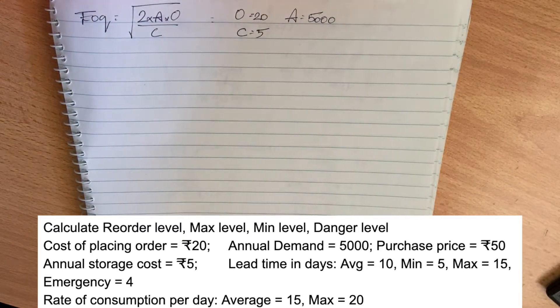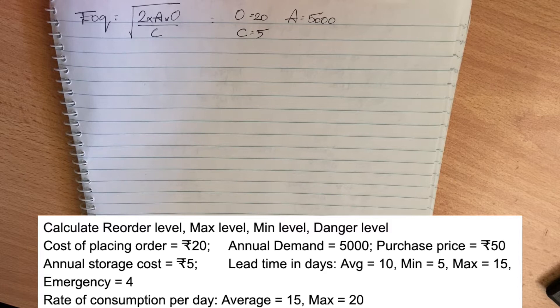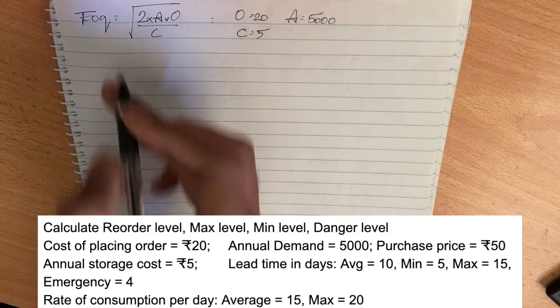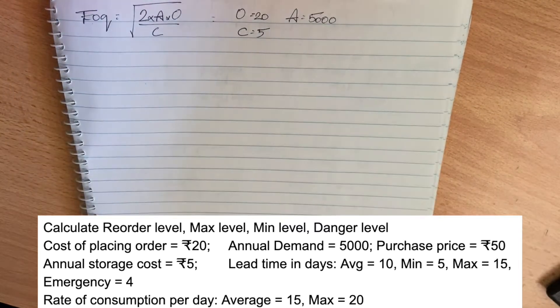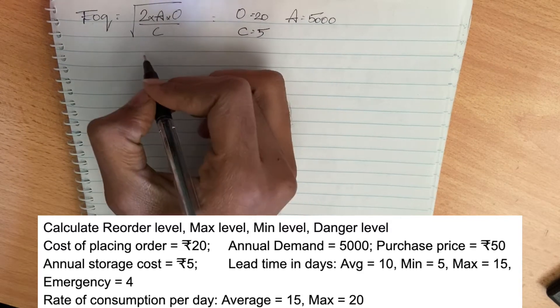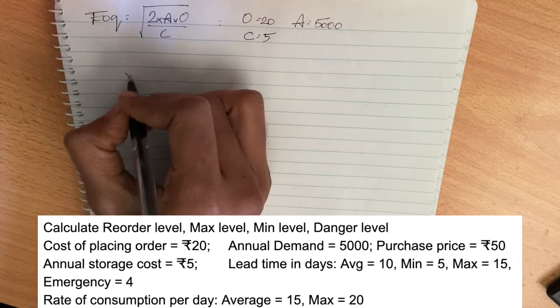The purchase price per unit inclusive of transportation cost is 50, so that is the inventory purchase price. We have annual demand, ordering cost, and carrying cost. So this is the formula.